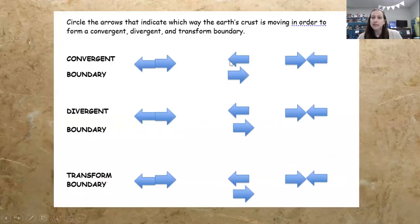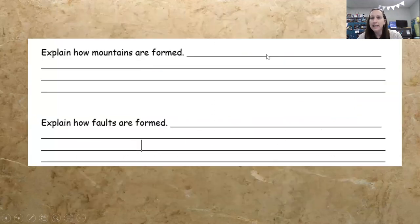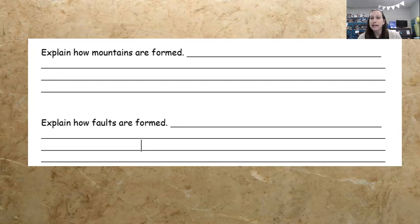There's a formative assessment on the handout in your folder. Students will circle a convergent plate boundary, divergent boundary, and transform boundary representation with arrows. Then they'll explain how mountains are formed — convergent boundaries — and explain how faults are formed.